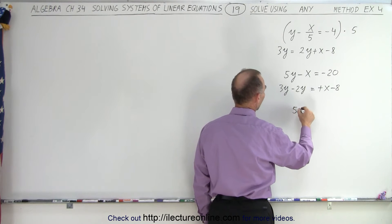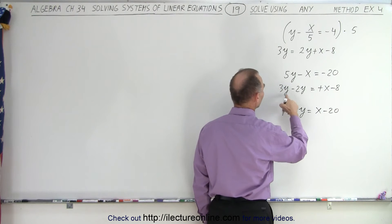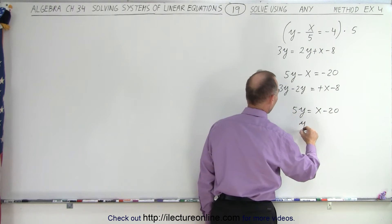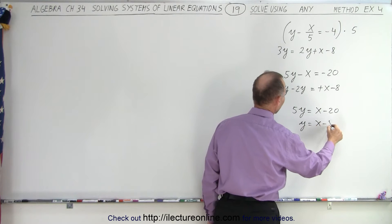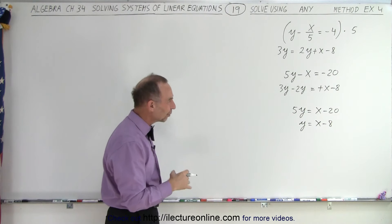So we get 5y equals x minus 20, and here we end up at 3y minus 2y, which is y equals x minus 8. So now at least, I have them both in a similar format.